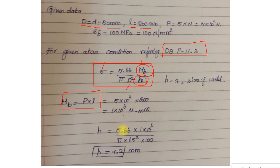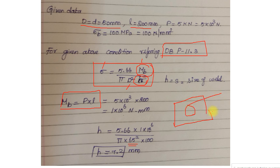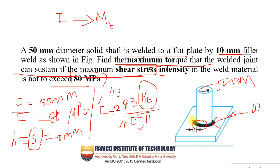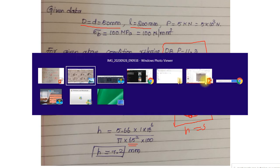Now I have all the values except h. So h is equal to 5.66 into 1 into 10 to the power 6 divided by pi into 65-squared into 100, which gives h equal to 7.2 mm. The size of the weld h (or s) is what we are solving for, and I hope you understood this second problem.